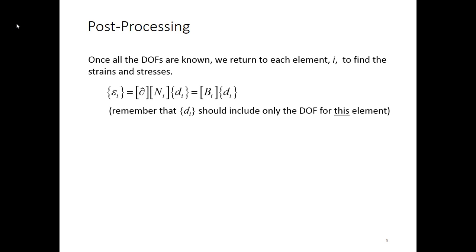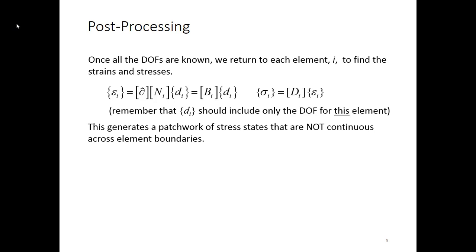Once all degrees of freedom are known, you go back to each element. The strain equals the B matrix times the nodal degrees of freedom. You do this in each element individually because the B matrix changes for different elements. The little d sub i is those degrees of freedom for this particular element, not the global D vector. Then you take the strains and determine stresses by multiplying by the D matrix, the stress-strain relationship matrix.